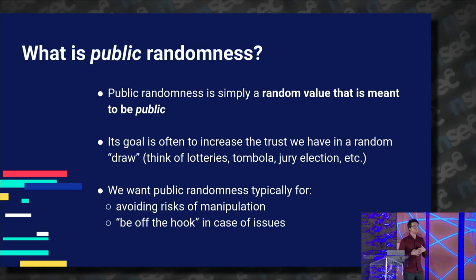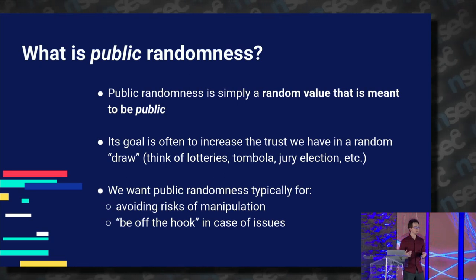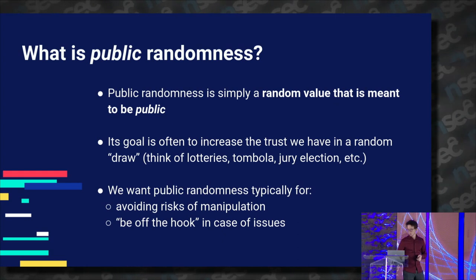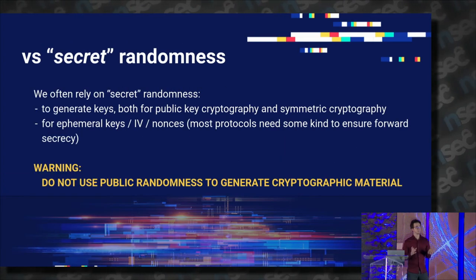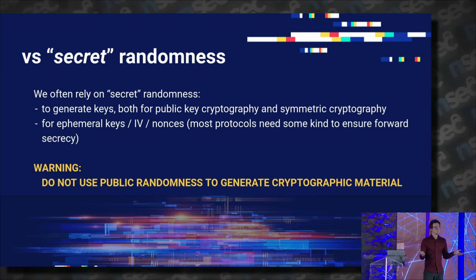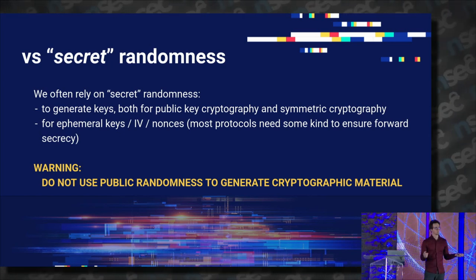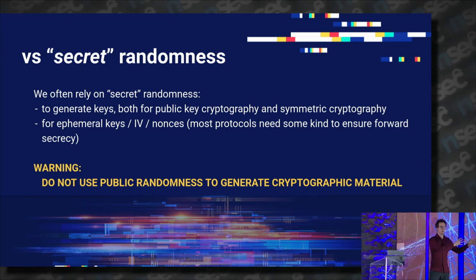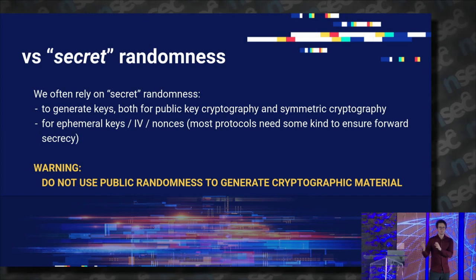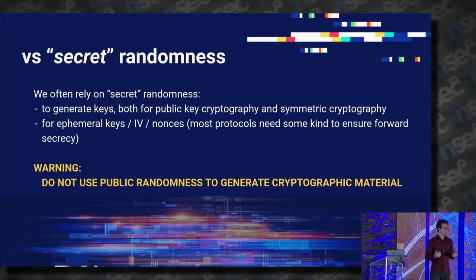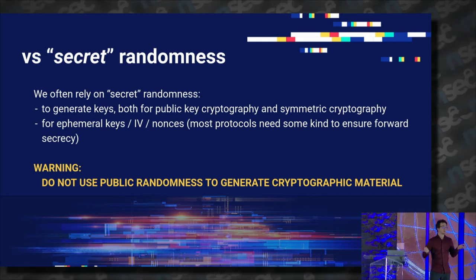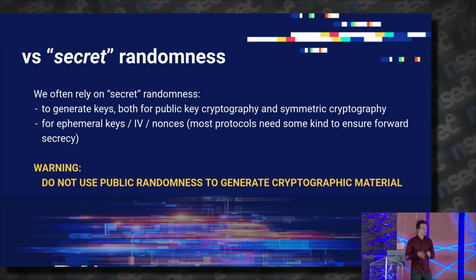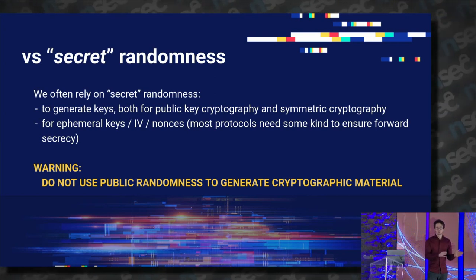Public randomness is something you want everybody to be able to access and use for their own needs, be it for a lottery, a game, gambling, and so on. But we also need to distinguish between public and secret randomness. You've all got UBI keys, SSH keys, PGP keys on your computers — these are secret keys not meant to be public. So if you take a public random value and use it to produce your secret key, that's not going to work well. Do not, never, use public randomness to generate secret keys.